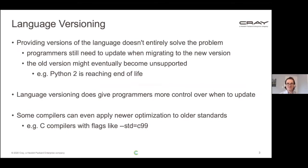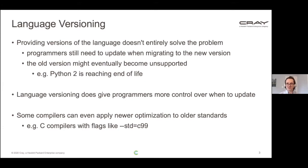This idea of providing versions of the language doesn't quite solve the problem in its entirety, because programmers still need to update to the new version at some point. For example, with Python, Python 2 is reaching end of life. There's lots of Python 2 code out in the world, and someone will have to update it to Python 3. What language versioning does do is give programmers control over when they update. Some compilers even let you use a newer compiler with older language standards — that's common with C compilers using flags to select the C standard.